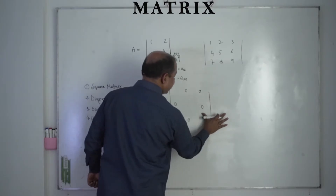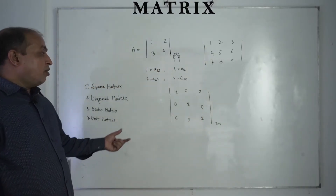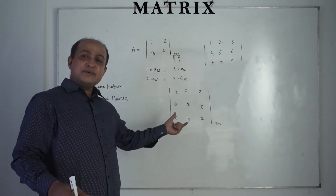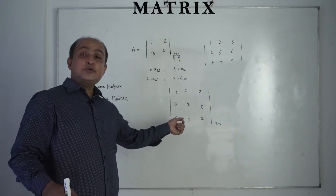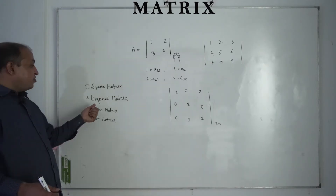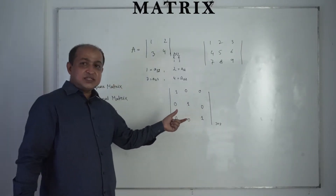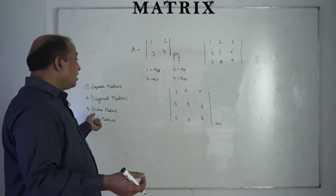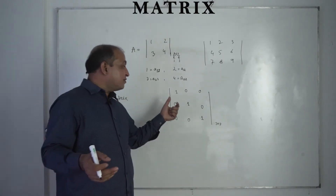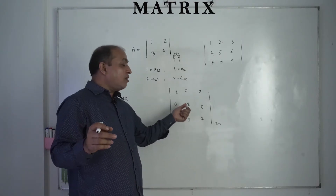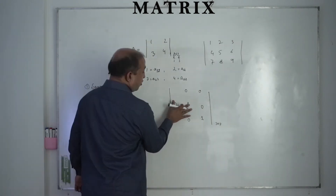The fourth type is the unit matrix. When the diagonal elements are all equal to 1, that is called the unit matrix. All elements off the diagonal are zero, the diagonal elements are all equal, and they are all equivalent to 1. So: in a diagonal matrix, the off-diagonal elements are zero and diagonal elements may differ; in a scalar matrix, the diagonal elements are all the same; and in a unit matrix, all diagonal elements are equal to 1.